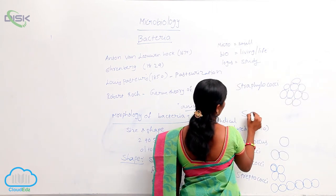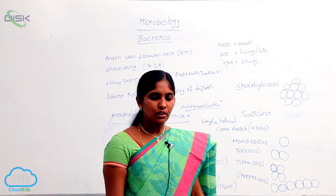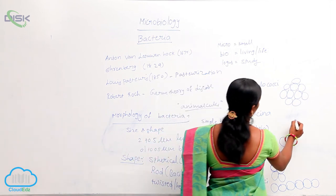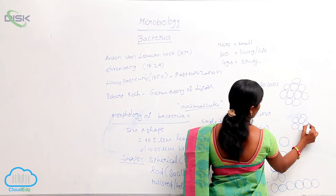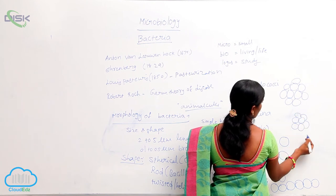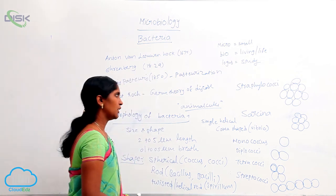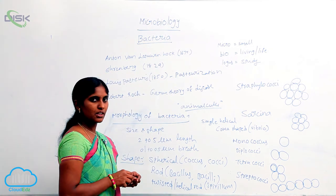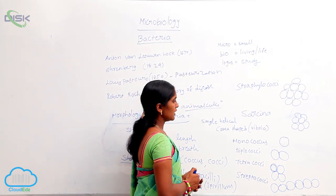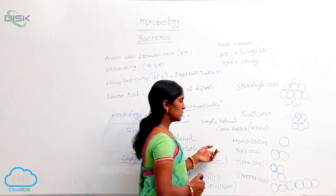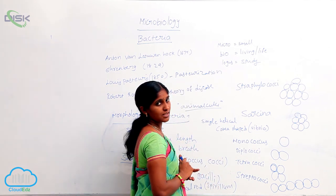Next is sarcina. Sarcina means the bacteria are arranged in a cubical shape. So, in different arrangements according to the number of individuals present: monococcus, diplococcus, tetracoccus, streptococcus, staphylococcus, and sarcina.